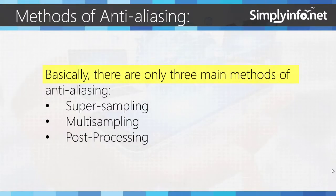Methods of anti-aliasing: basically, there are only three main methods of anti-aliasing — super sampling, multi-sampling, and post-processing.